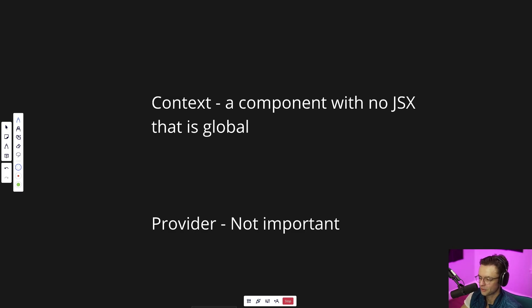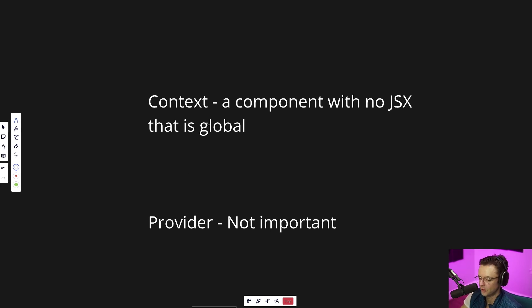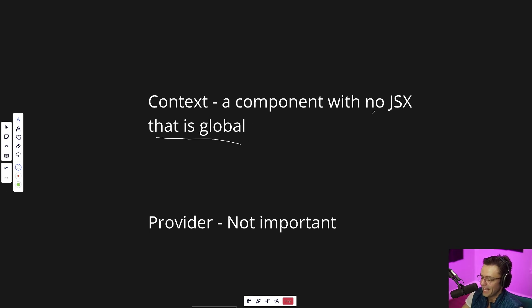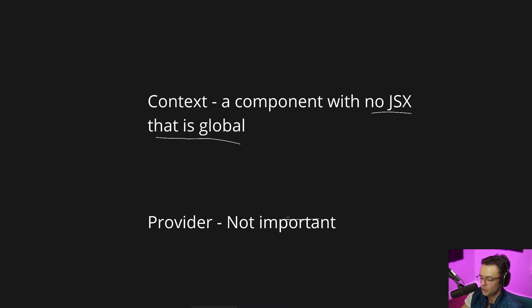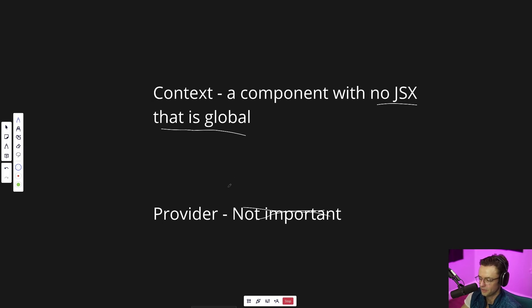React Context is created with a Context and a provider. Context is pretty much the component — it's a React component that can be shared, that is global, and has no JSX in it. Context isn't going to have JSX because you're not rendering HTML, you're sharing data. The provider is there just to provide the data. You use the provider once and that's pretty much it — you just set it up and it's good to go.